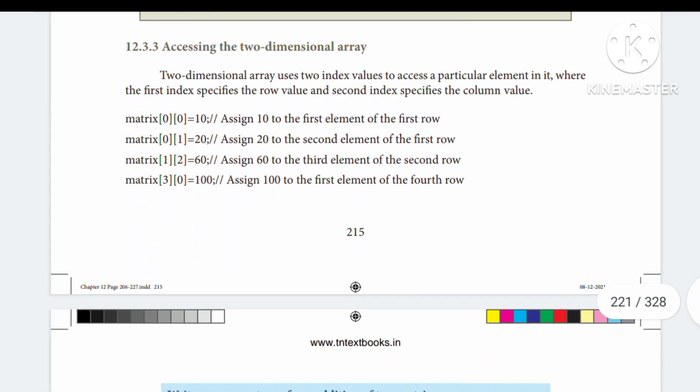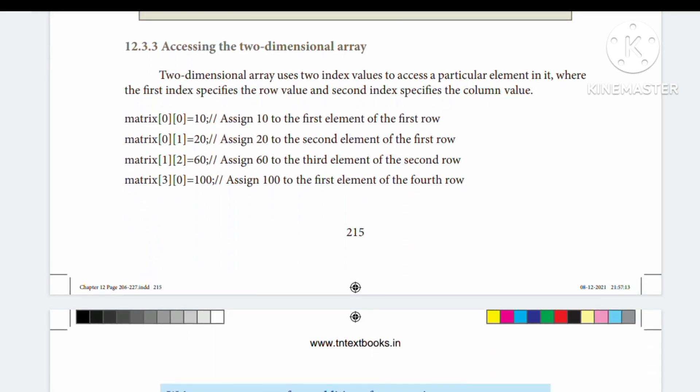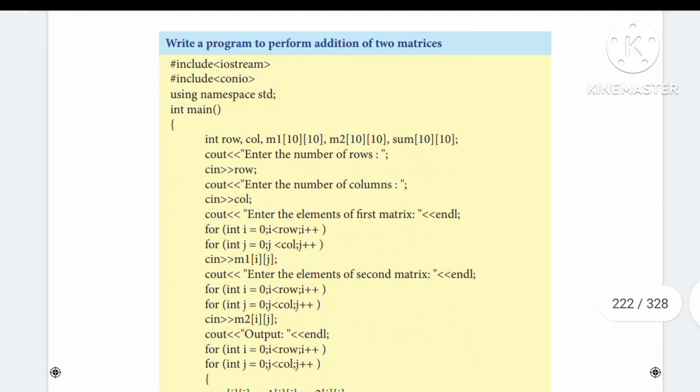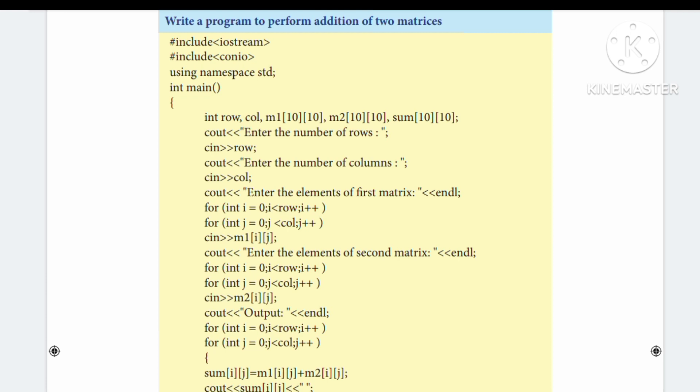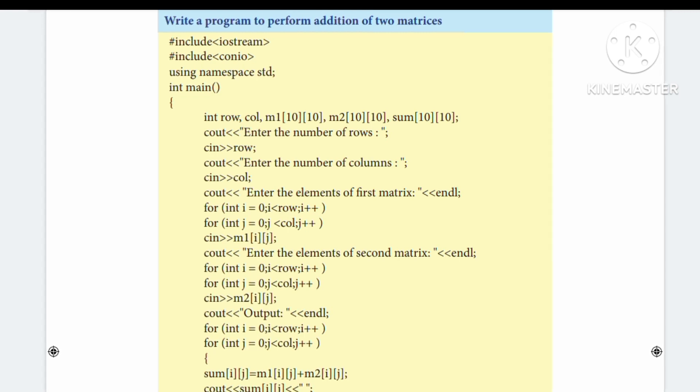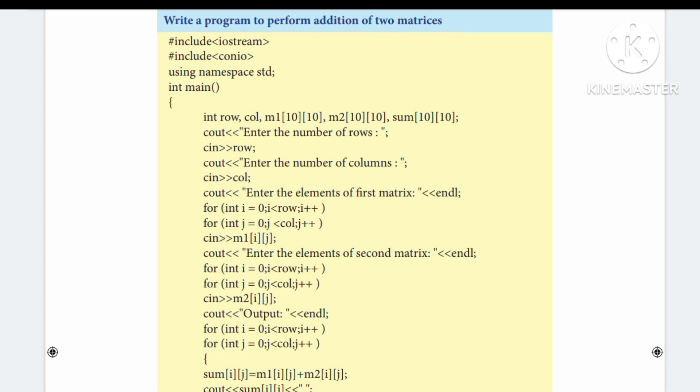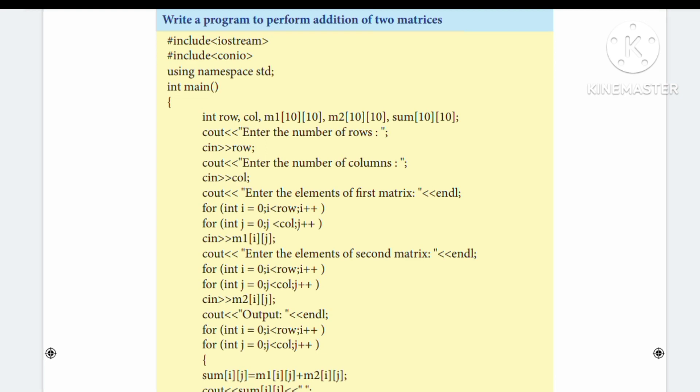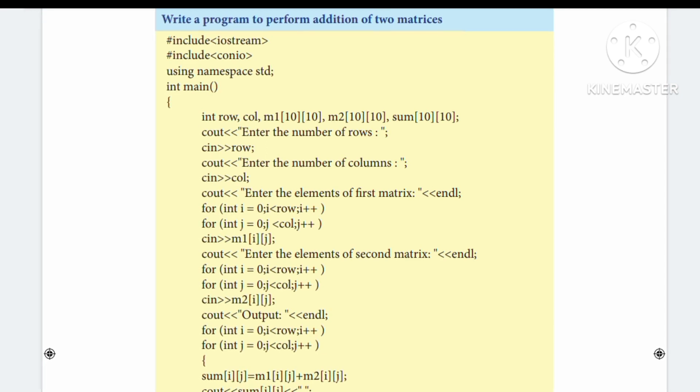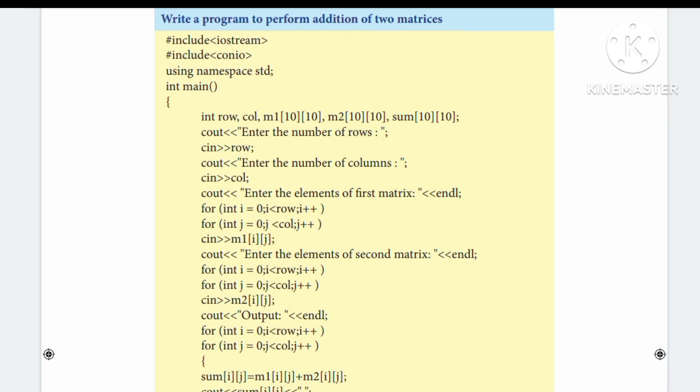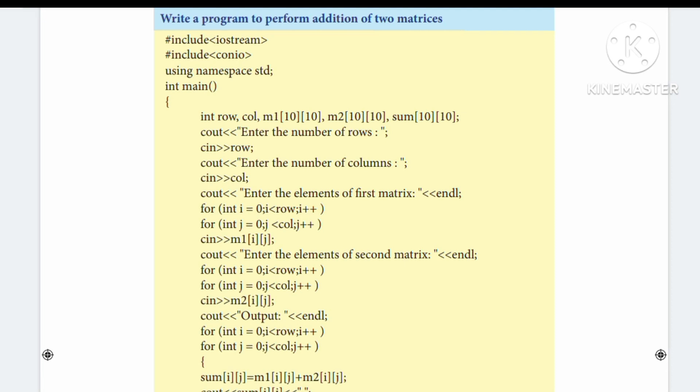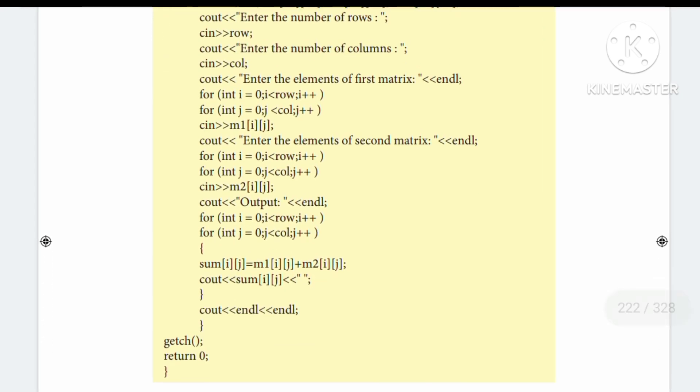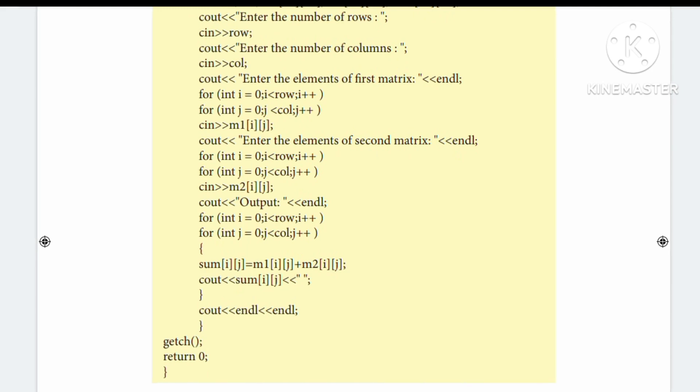How do we access the values in a 2D array? In single dimension, we use the variable name with one index in brackets. In 2D arrays, we use two indices. For example, to access elements in a 2x2 matrix, we use a[0][0] for the first element, a[0][1] for first row second column, and so on.